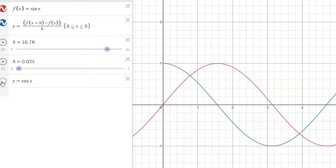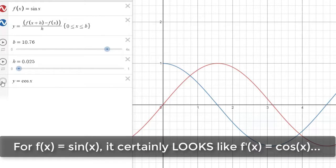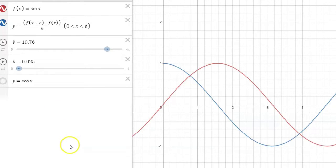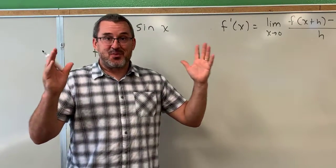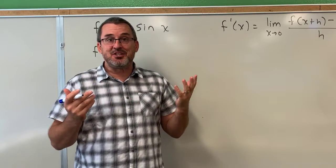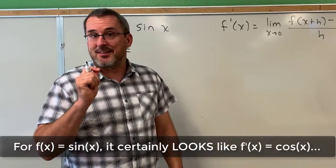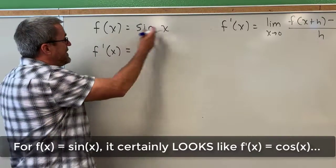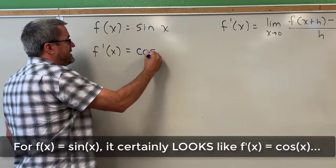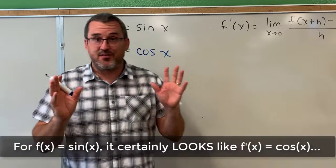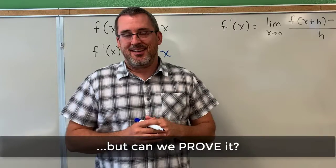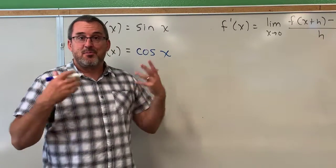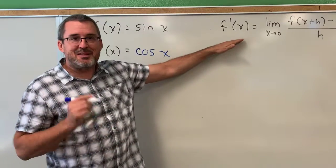So we have graphical evidence that the derivative of the sine of x function should be the cosine of x function. But let's go explore it more formally. After working with Desmos, we can make a claim that if f of x equals sine of x, the derivative of f of x should be cosine of x. That graphical evidence is strong and compelling, but it's not a formal mathematical justification. So we're going to continue by going back to the limit definition of derivative.